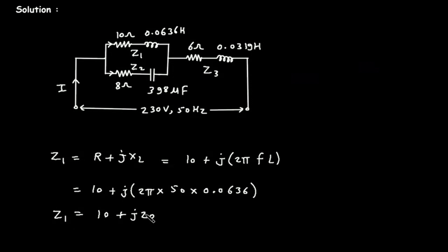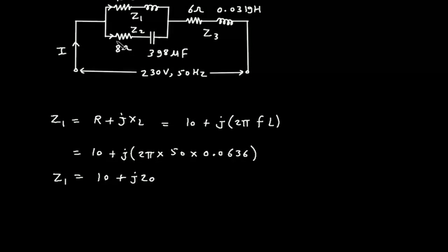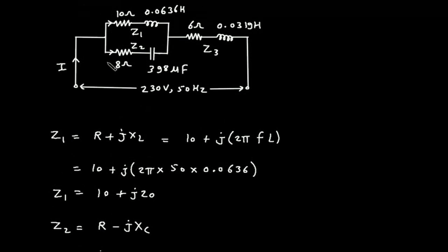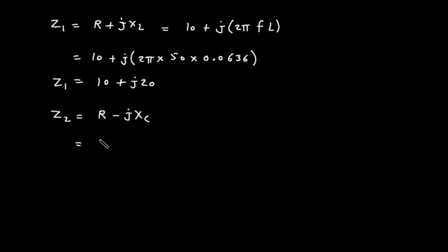Then Z2 is the combination of R and C. Z2 = R − jXC. The formula for XC is 1/(2πFC), and the value for R is 8 ohm.